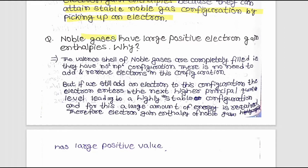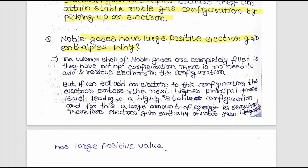Why do noble gases have very large positive electron gain enthalpy? The valence shell of noble gases is completely filled, so there is no need to add or remove electrons. If we add an electron, it enters the next higher principal energy quantum level, leading to a highly unstable configuration, and for this a large amount of energy is required. Therefore, the electron gain enthalpy of noble gases has a large positive value.